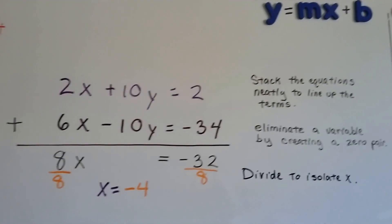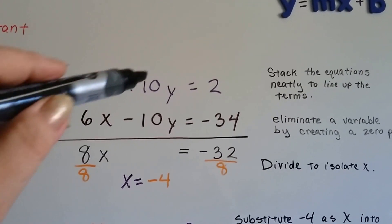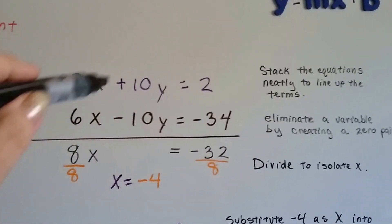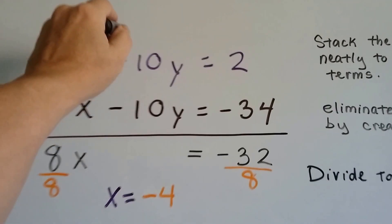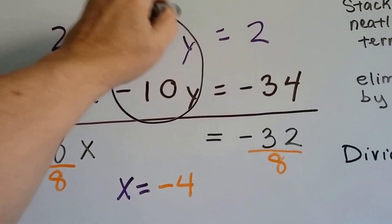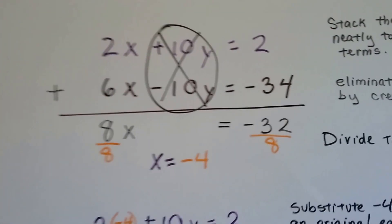So stack the equations neatly to line up the terms, and now you can see this is going to make a zero pair. We'll be able to eliminate this y.